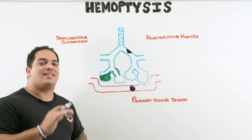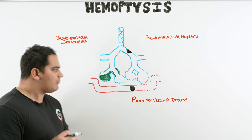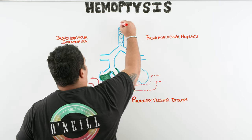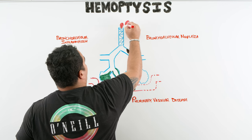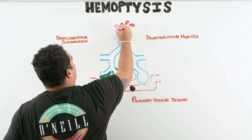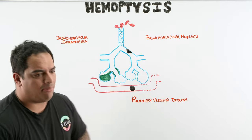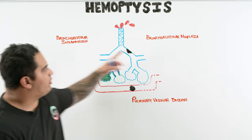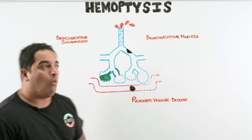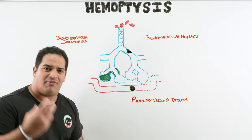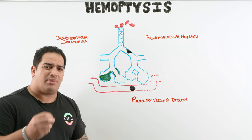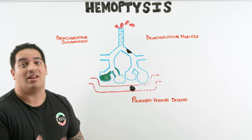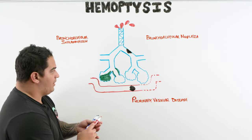This is a quick lecture designed to help you understand how to work up hemoptysis. When a patient develops hemoptysis, that means they're coughing up blood — that's the primary feature. The pathophysiological process comes down to three things: first, bronchoalveolar inflammation, where something inflames the airways causing erosion through the bronchial wall and ulceration of bronchial arteries, allowing blood to leak in.